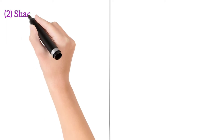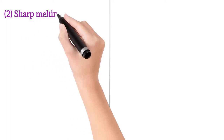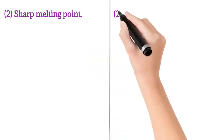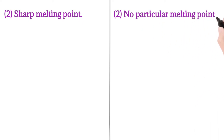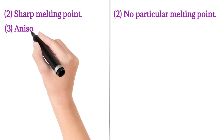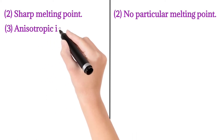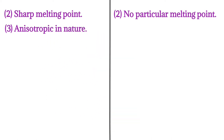The next point: in the case of crystalline solid, they have a sharp melting point, meaning they have a definite high melting point. But in the case of amorphous solid, they have no particular melting point.